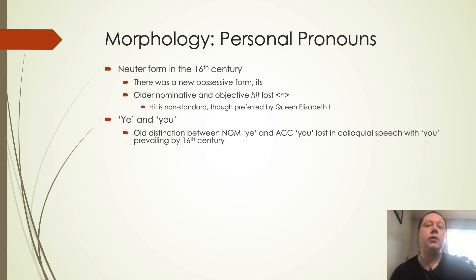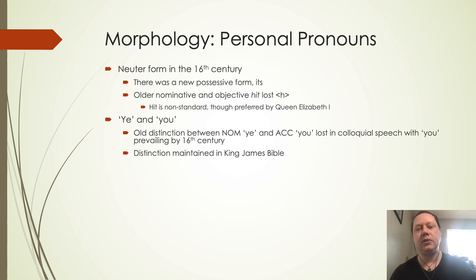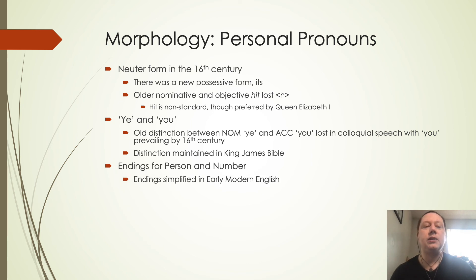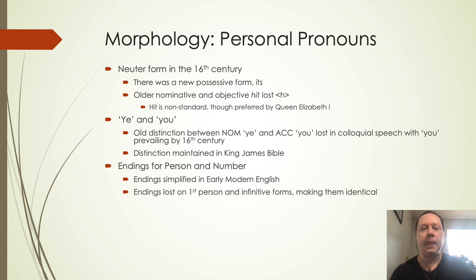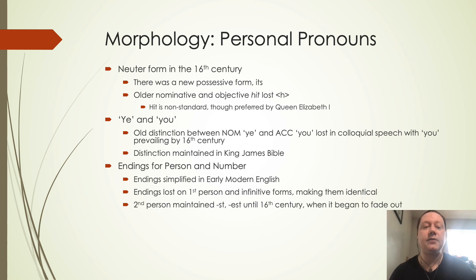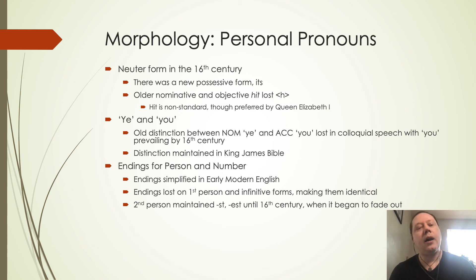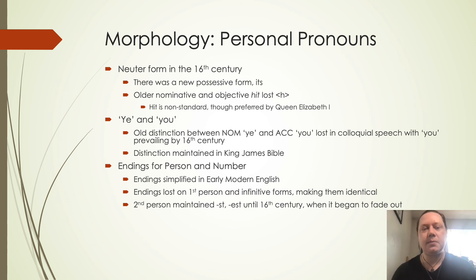With 'ye' and 'you,' the old distinction between nominative 'ye' and accusative 'you' starts being lost in colloquial speech, and 'you' ends up prevailing by the 16th century, though we still see 'ye' in things like the King James Bible. We start seeing the endings for person and number simplified — lost in the first person and infinitive forms, making them identical, so 'I walk' versus 'to walk' look exactly the same. The second person '-est' form, as in 'thou goest,' starts to fade out, still maintained in the King James Bible but falling away during this period.